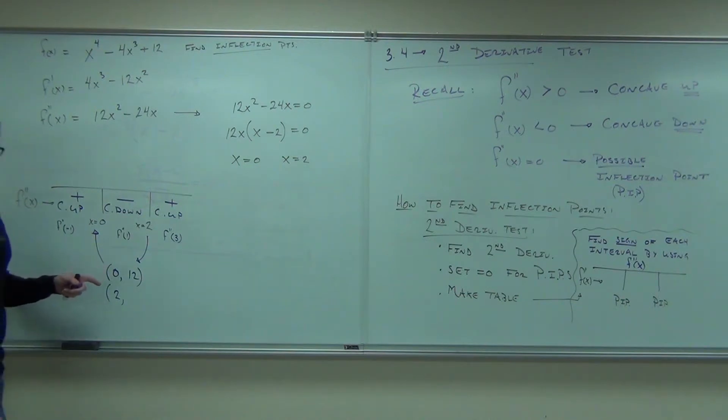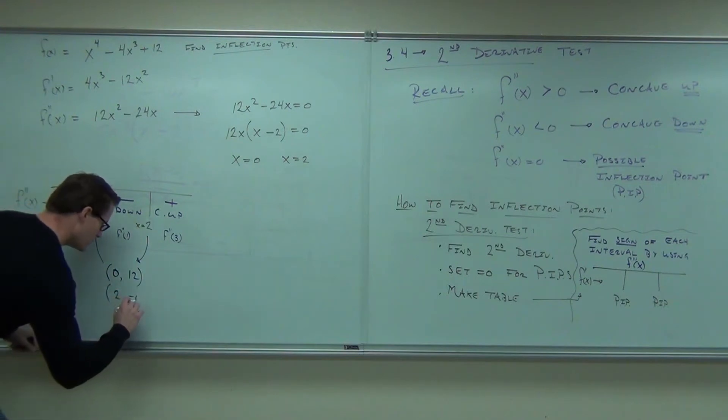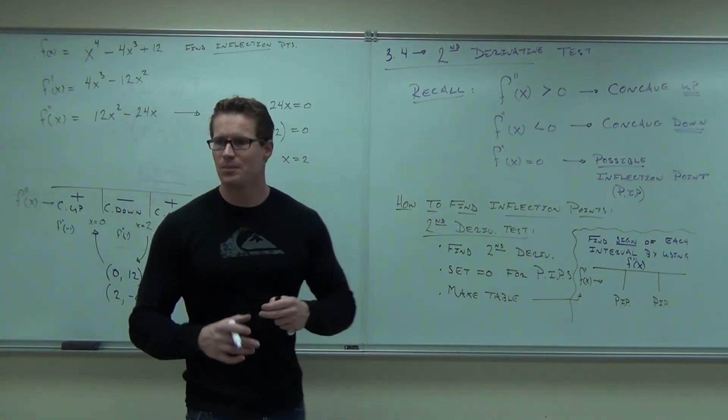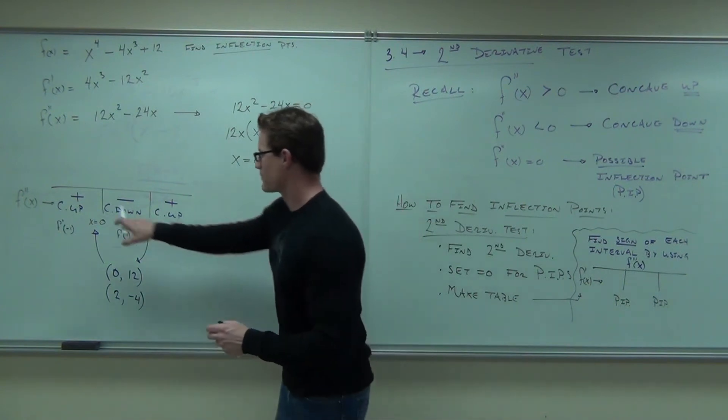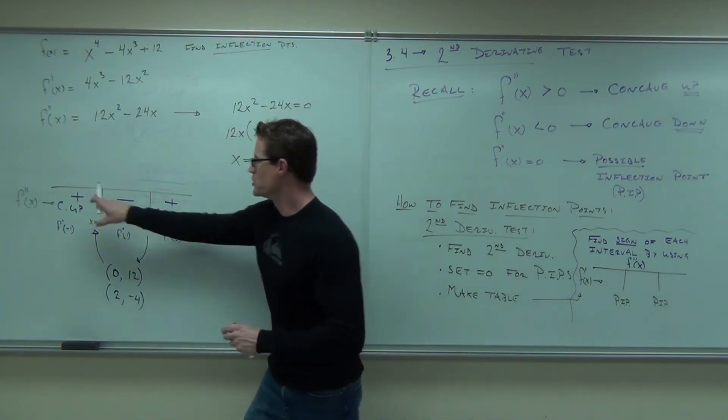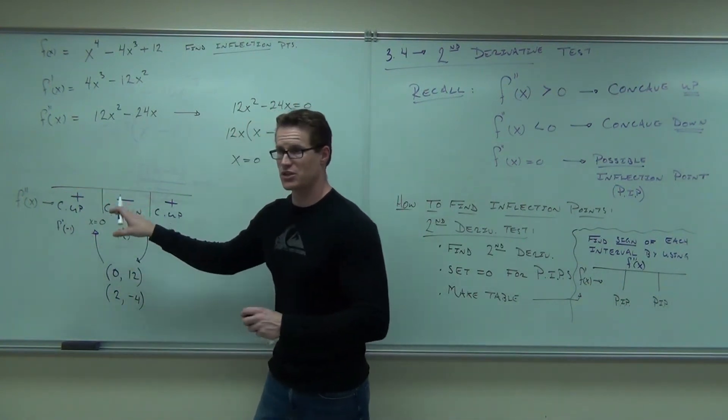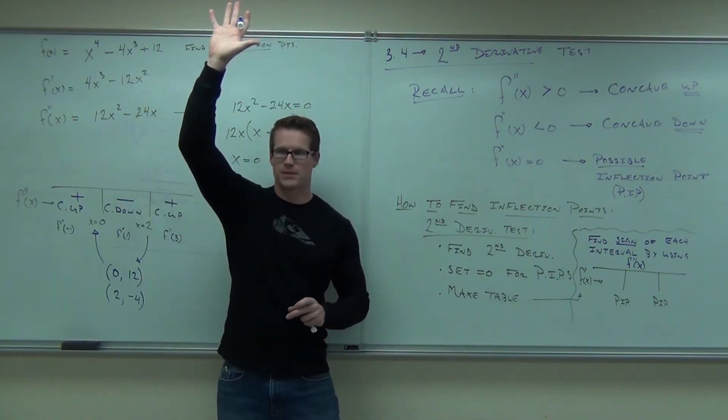Did you get 0, 12? No. 16. Negative 4? Negative 4. Cool. Those are my two inflection points. Came from 0 and 2, those are the points. We knew they were inflection points because the concavity changes there. Raise your hand if you feel okay with this so far. Good deal.